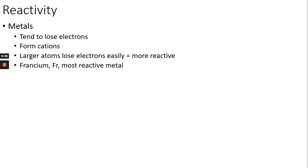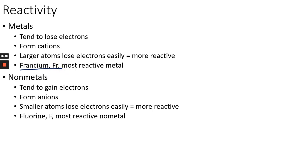Reactivity is divided between metals and non-metals. Metals tend to lose electrons, forming cations — the larger the atom, the easier it is to lose electrons and the more reactive it is. Francium is the most reactive metal, so the closer you are to francium, the more reactive. Non-metals gain electrons to form anions — the smaller the atom, the easier it is to gain electrons and the more reactive. Fluorine is the most reactive non-metal. Remember the F words: francium is the most reactive metal, fluorine is the most reactive non-metal.